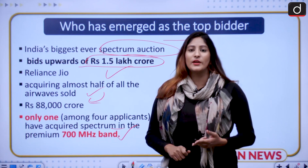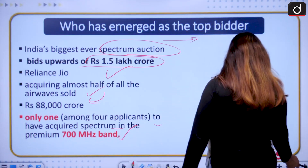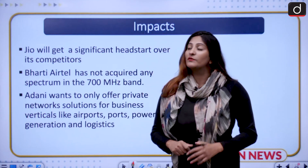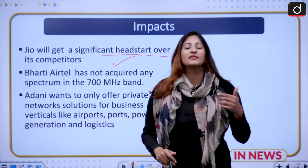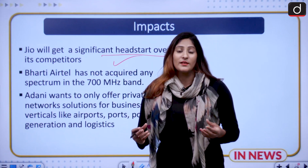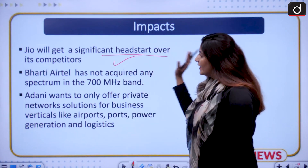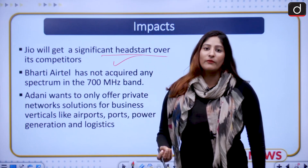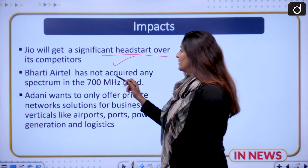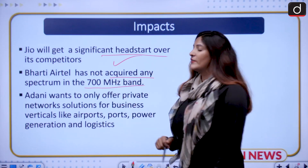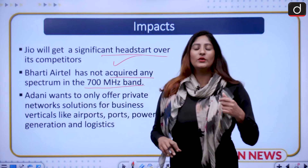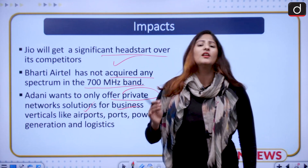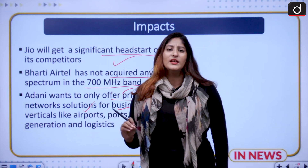Among the four bidders — Reliance Jio, Vodafone, Bharti Airtel, and Adani — Jio will get a significant head start over its competitors as the only bidder to acquire the coveted 700 MHz band. Bharti Airtel did not acquire any spectrum in the 700 MHz band. Adani wanted only its own private network solution for business verticals like airports and other infrastructure, and is not entering the consumer services spectrum.